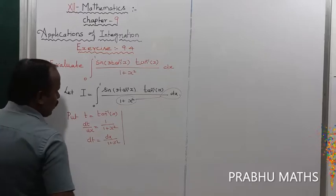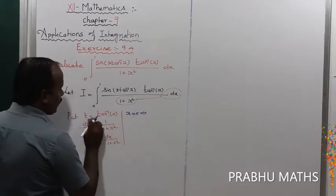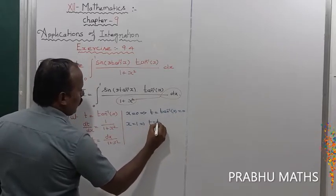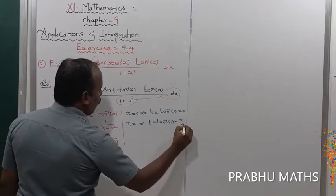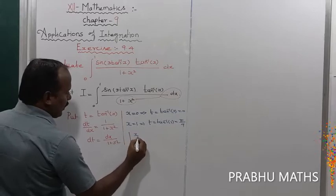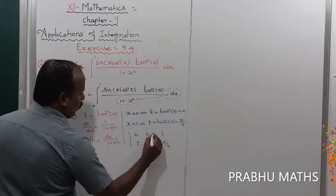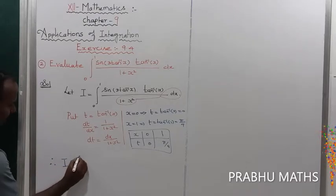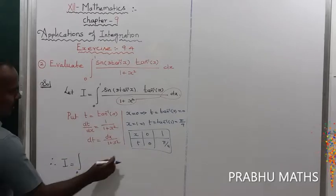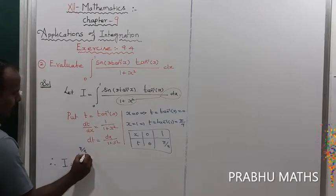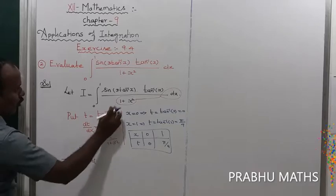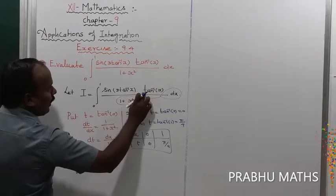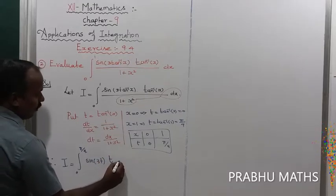Also, tan⁻¹x is replaced by t. Now we change the limits: when x = 0, t = tan⁻¹(0) = 0; when x = 1, t = tan⁻¹(1) = π/4. So the new limits for t are 0 to π/4. The integral becomes i = ∫₀^(π/4) t·sin(3t) dt.